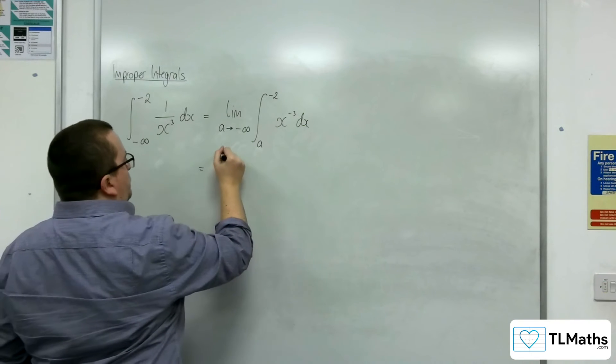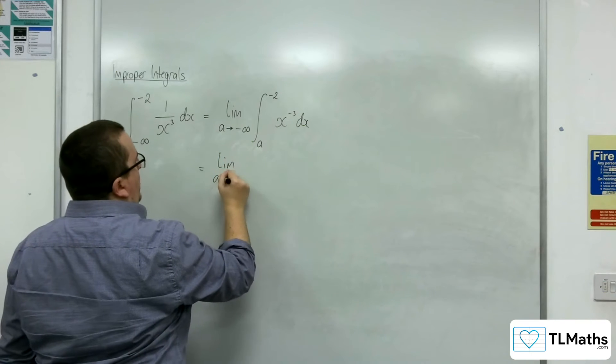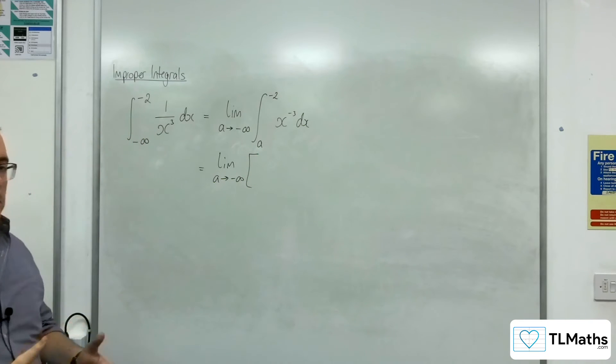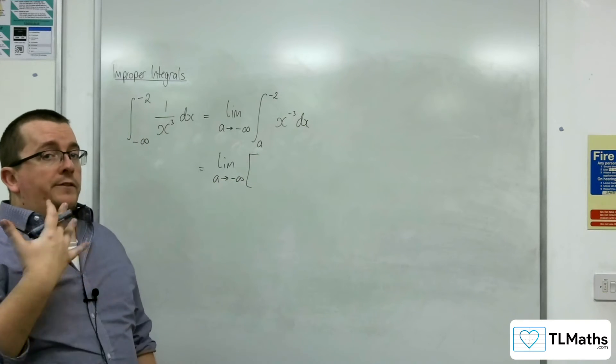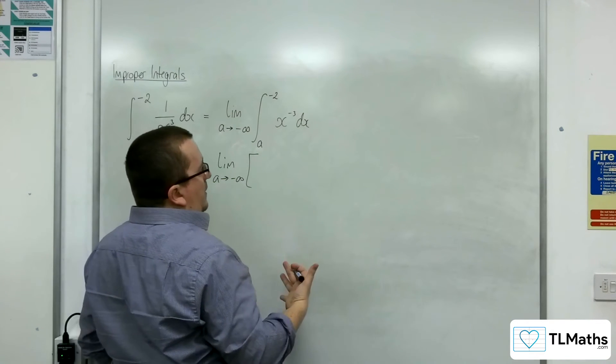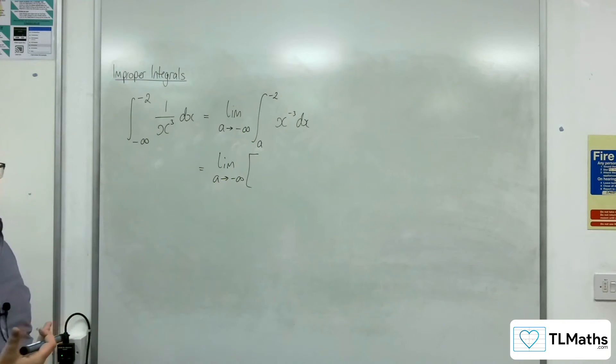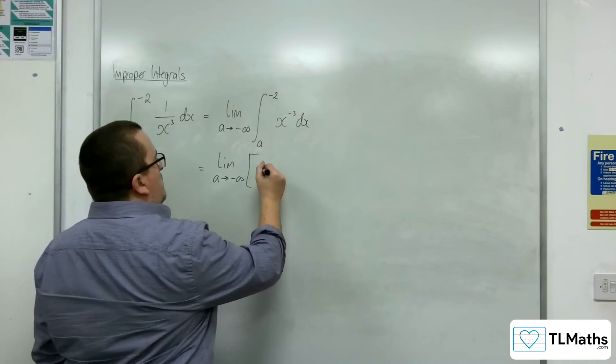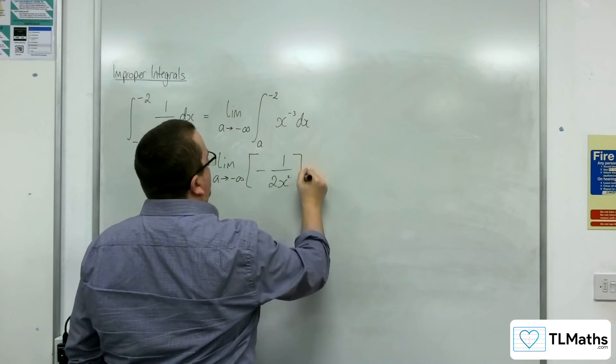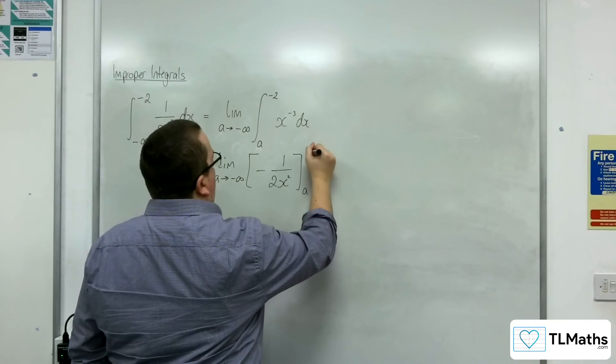Then the limit as a tends to negative infinity. Evaluating the integral, x to the minus 3, add 1 to the power, divide by the new power. So we're going to get minus a half times x to the minus 2. So that's minus 1 over 2x squared, evaluated between a and minus 2.